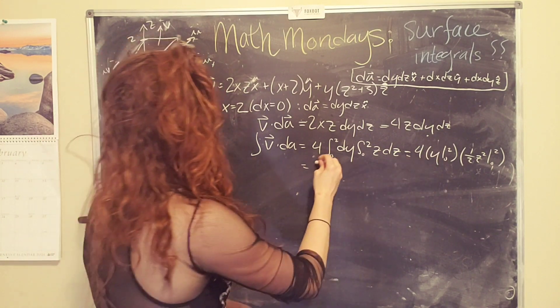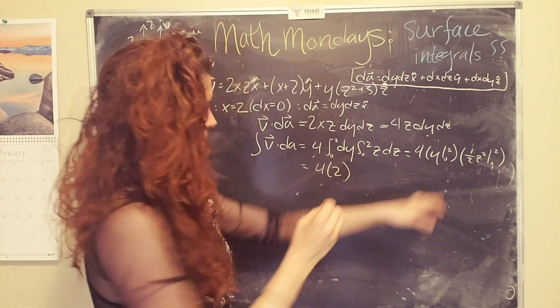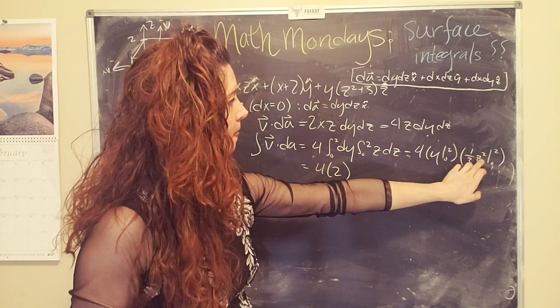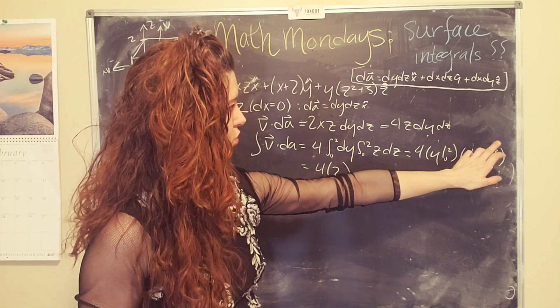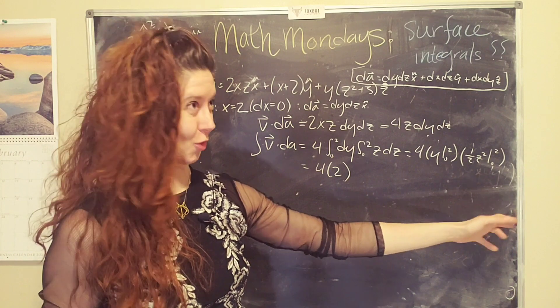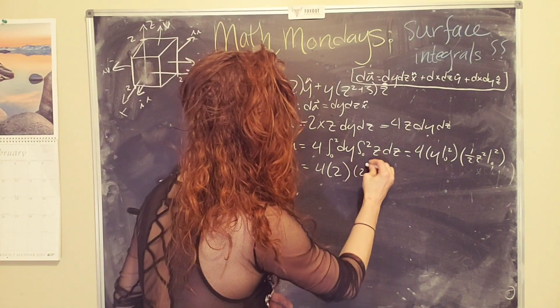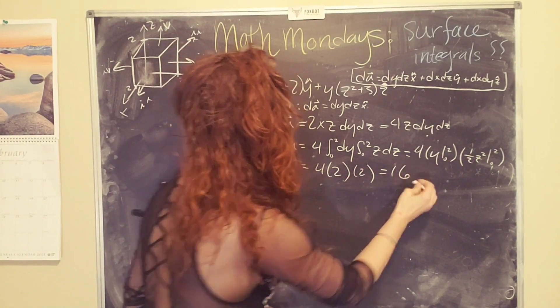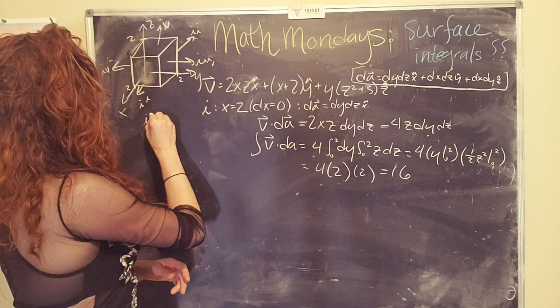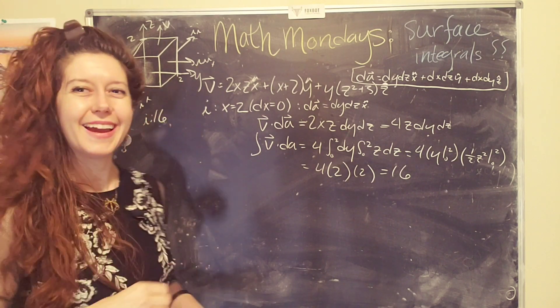So, this is going to go to two. So two minus zero is just two. Two squared is four. Two squared is four divided by two is two. This is going to give me 16. Okay. So the first surface gives me 16. Yay.